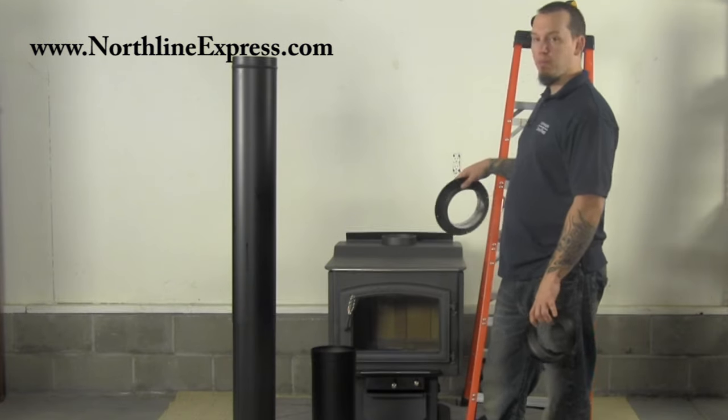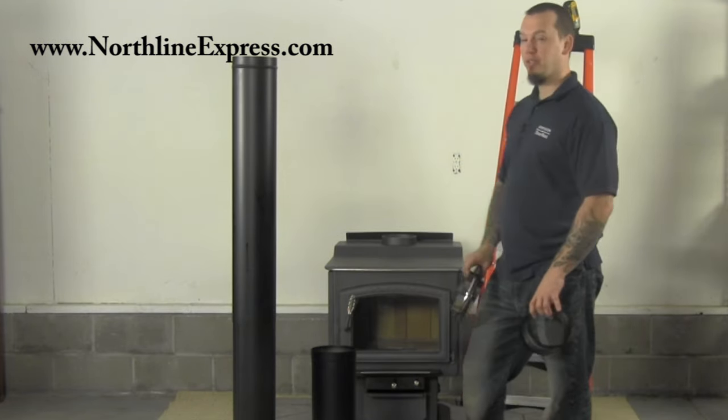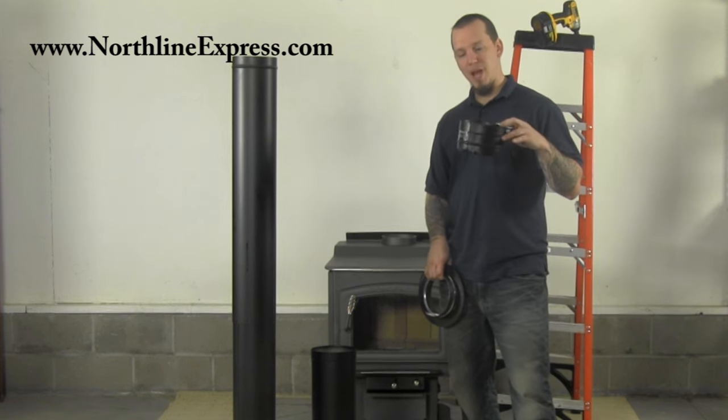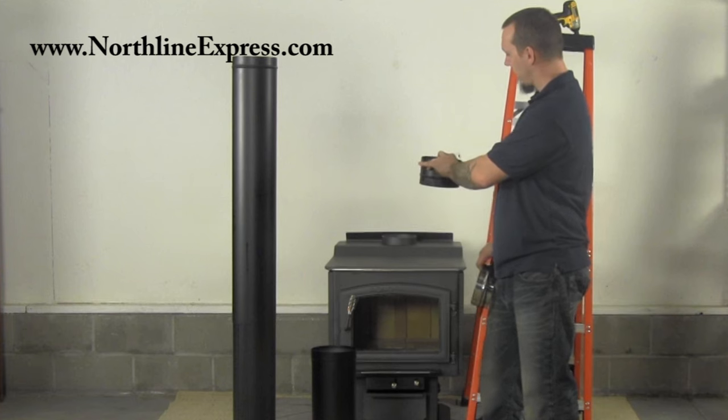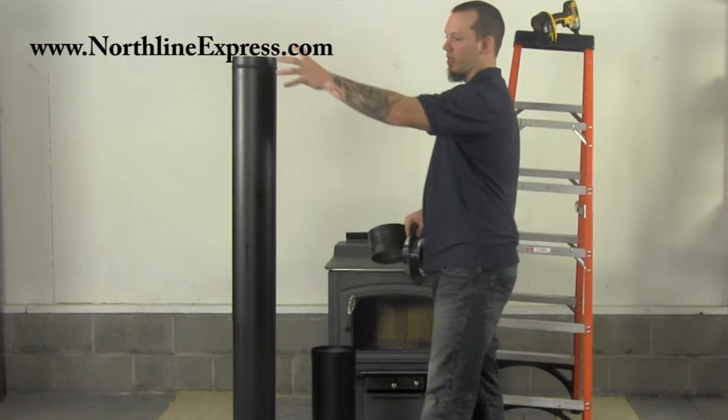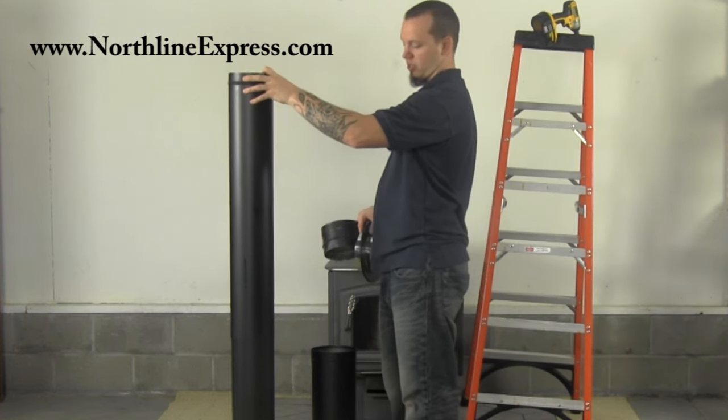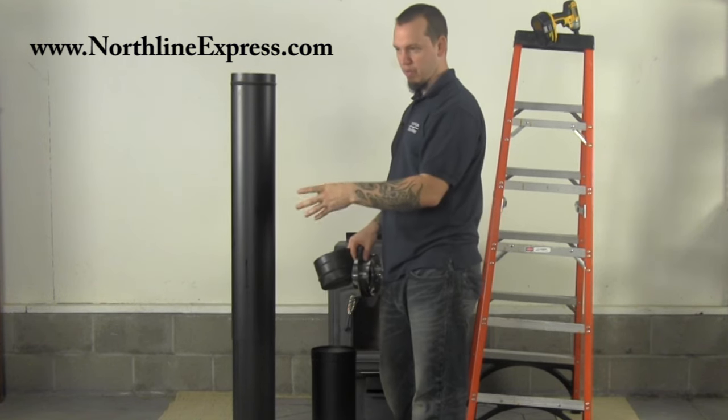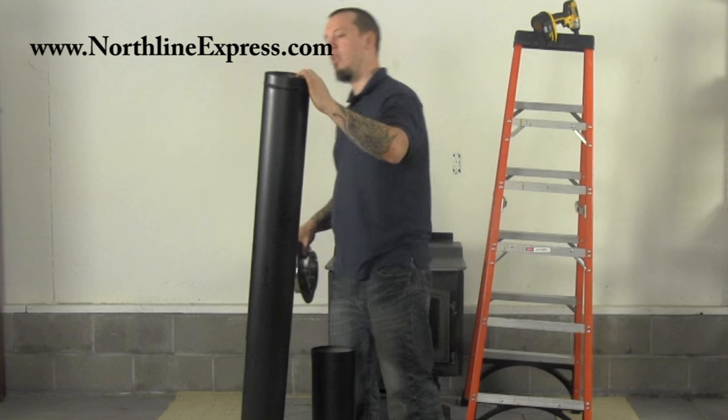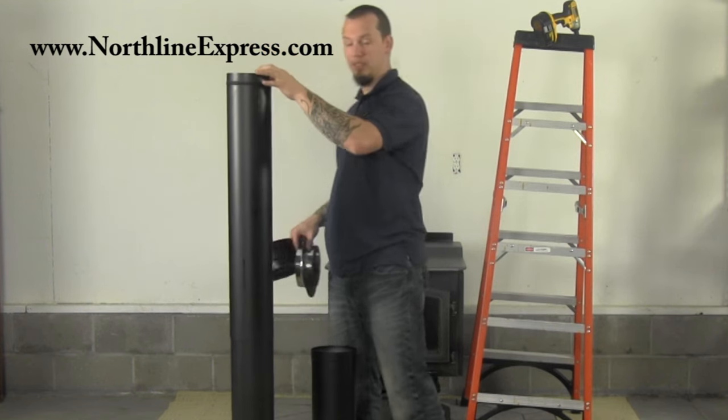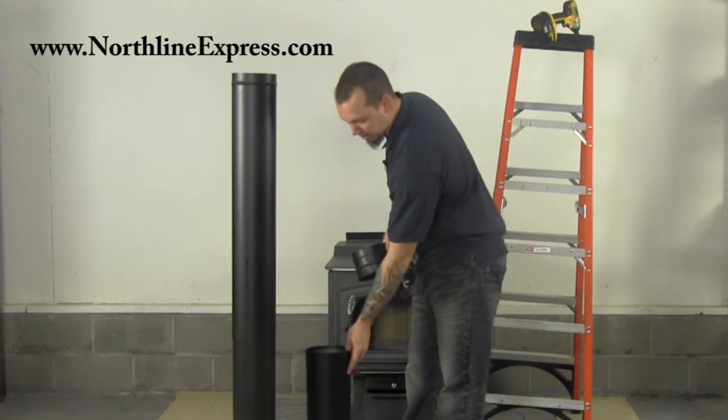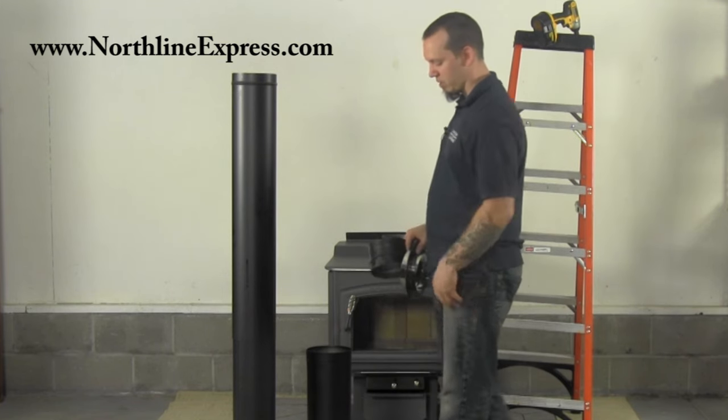We're going to attach our single wall black pipe from our stove to our round ceiling support using this stove top adapter. We'll go into our telescoping length of pipe that's adjustable from 40 to 44 inches up to 68 inches in length, and then we'll still need another two feet of pipe for the installation.